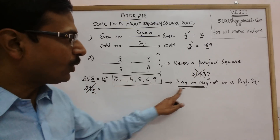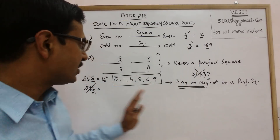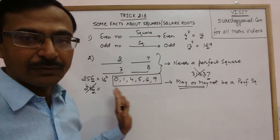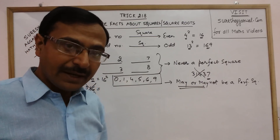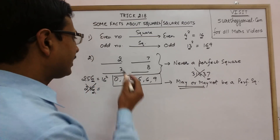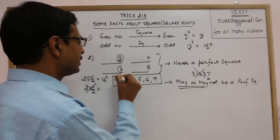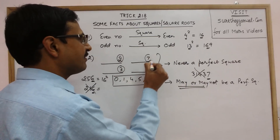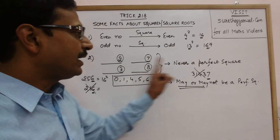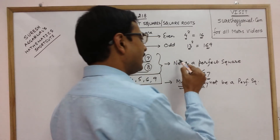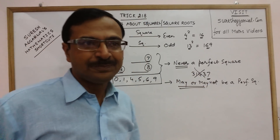So, it may or may not be a perfect square if the unit digit is 0, 1, 4, 5, 6, or 9. But certainly, if it contains 2, 3, 7, or 8 in the unit's place, then it is never a perfect square.